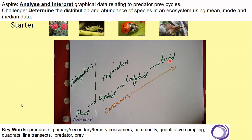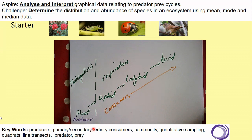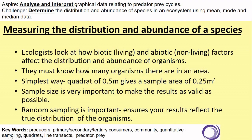At the bottom of the page we have keywords to review. We have producers, and primary consumer — in this case the aphid — secondary consumer the ladybird, and tertiary or third-level consumer the bird. The community is everything that lives in a particular environment. Quantitative site sampling is looking at the number of organisms within an area. Today's specific words include quadrat sampling, line transect sampling, and predators and prey. A predator in the example above would be a ladybird and its prey would be an aphid.